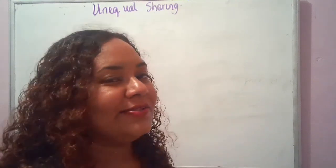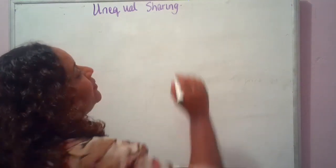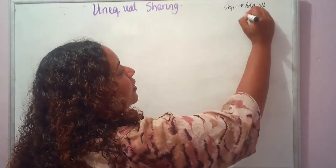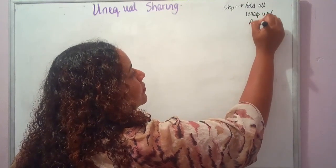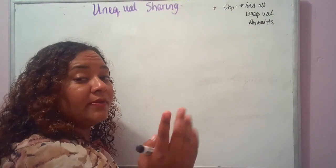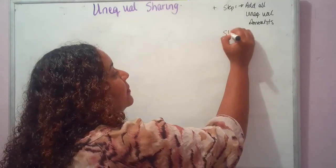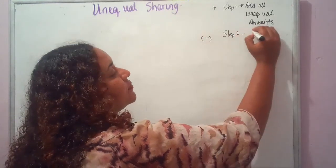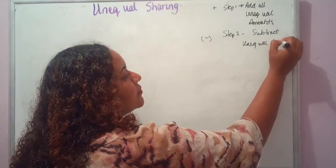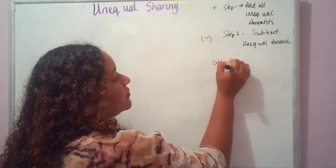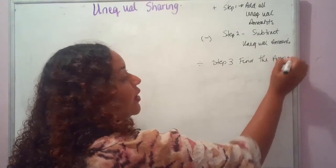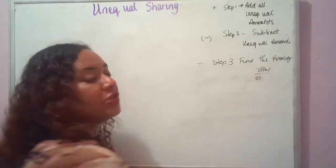Let's get into unequal sharing. The first thing to know is that it's a multi-step process. Step one: add all unequal amounts. If there are only two values and only one unequal amount, you omit this step and start from step two. Step two: subtract the unequal amounts. Step three: divide to find the average — total divided by the number of persons you're trying to find.